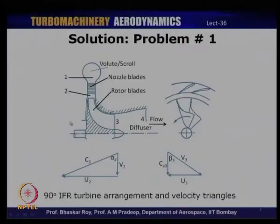Based on this data — rotor diameter, rotational speed, nozzle inlet angle, mean exit diameter as half the rotor diameter, and relative velocity at exit twice that at inlet — we need to find the specific work done. As always, we start solving a problem with the velocity triangles. Let us construct the velocity triangles for this case, which will help us understand what parameters are known and what we need to calculate.